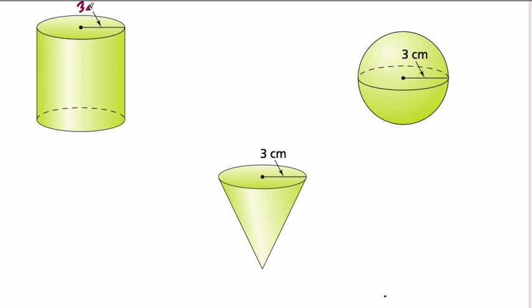So I think we should say that, first of all, they all have the same radius, and the height of the cone is 6 centimeters, and so is it on the cylinder.